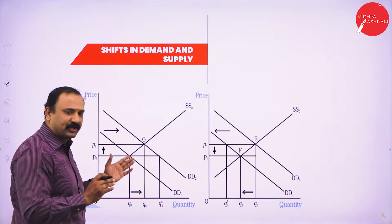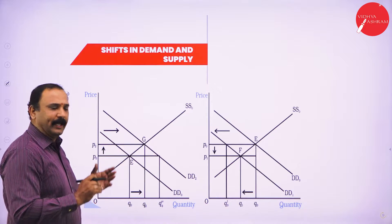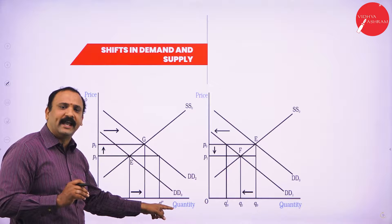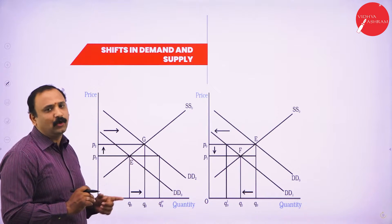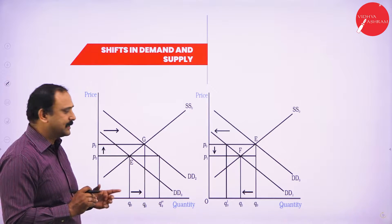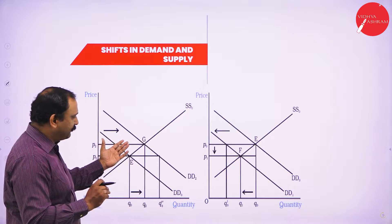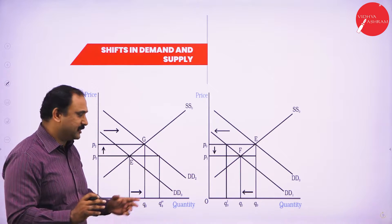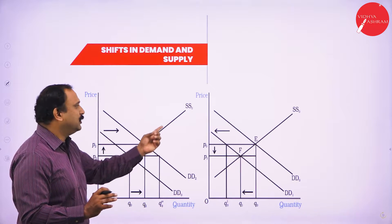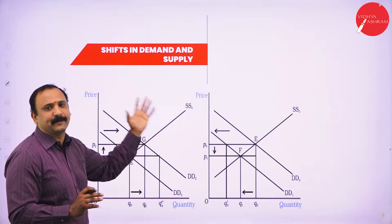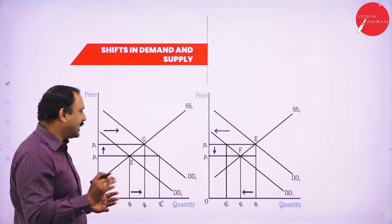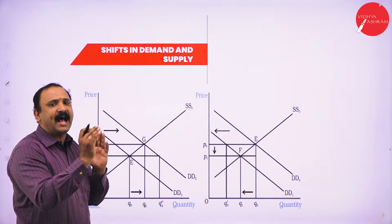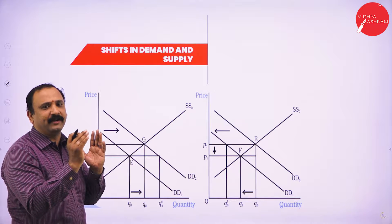Now let's look at the first graph. On the first graph, you will have quantity on the x-axis and price on the y-axis. Looking into the graph, there are two important factors — you will see the demand line and you will also see the supply line. So in the graph, we have both the supply as well as the demand factor.